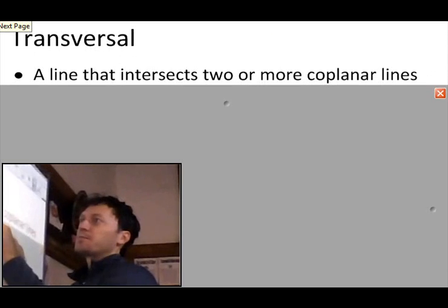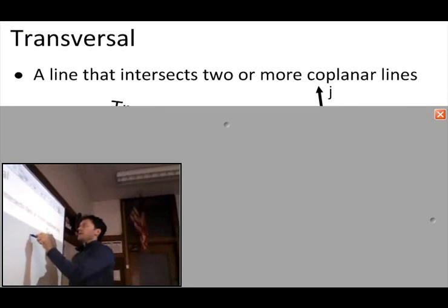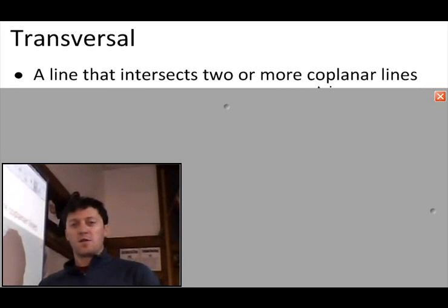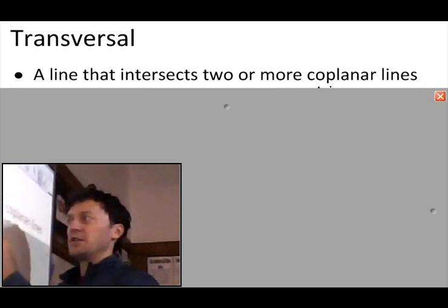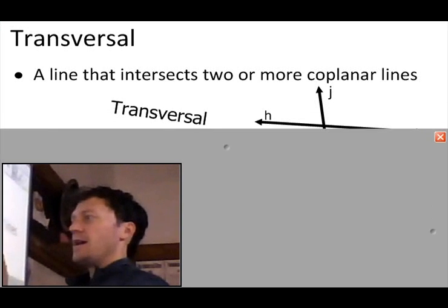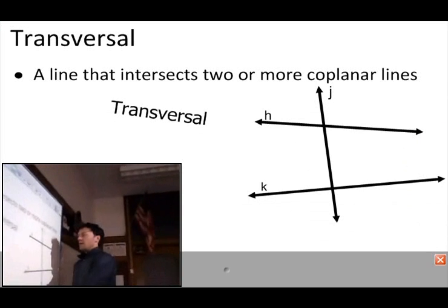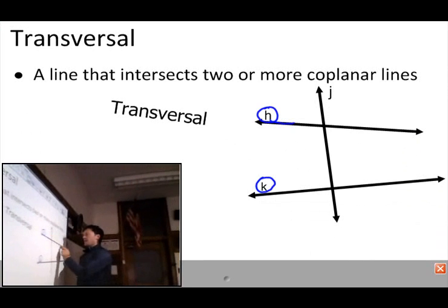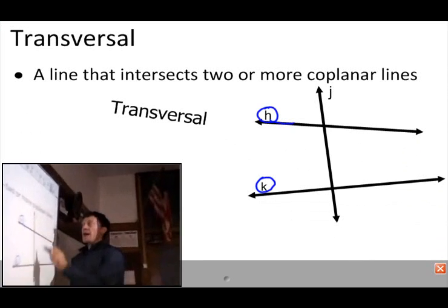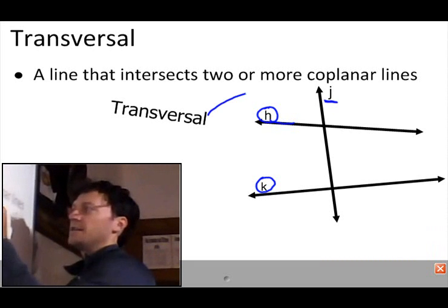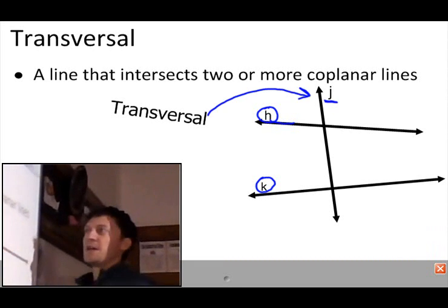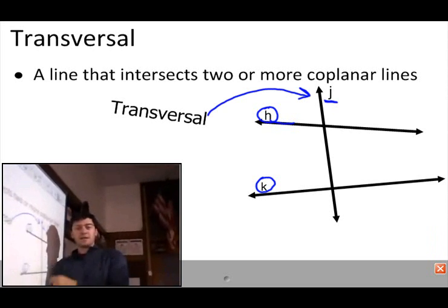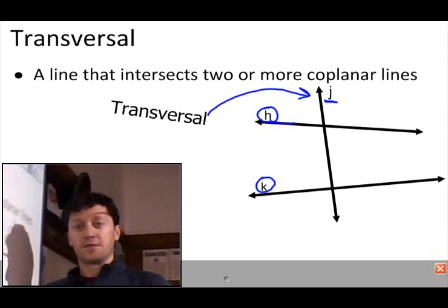Now let's go back to lines. A line that intersects two or more coplanar lines is called a transversal. We're on one plane — not worrying about skew lines. I've got lines H and K going along in the same plane, and along comes J. J is the transversal because J intersects those two lines H and K.